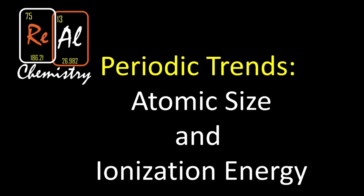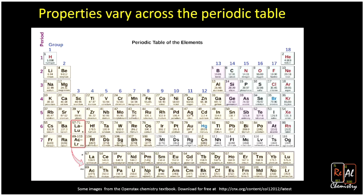A periodic trend is just some property that varies as you move across the periodic table. There are a number of these. One simple example would be atomic number — the little number that represents the number of protons. As we move from left to right, the atomic number increases: boron is 5, carbon is 6, nitrogen is 7. As we go from top to bottom, it also increases: nitrogen is 7, phosphorus is 15, and arsenic is 33.